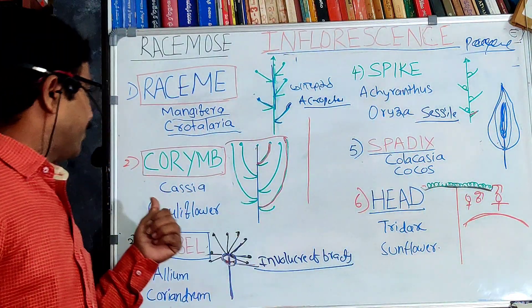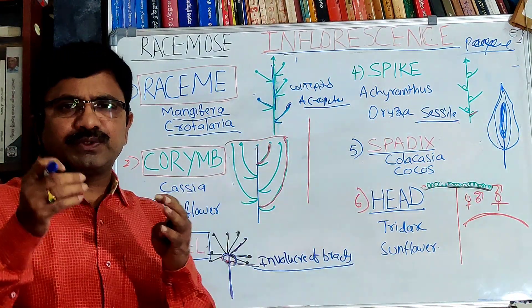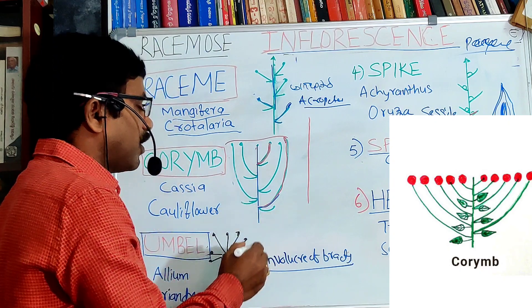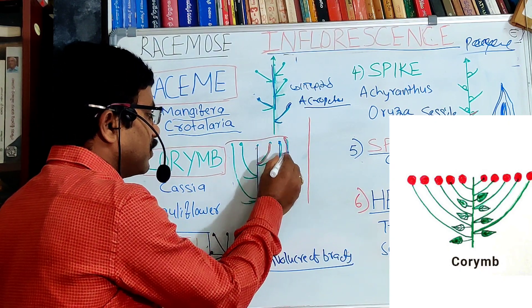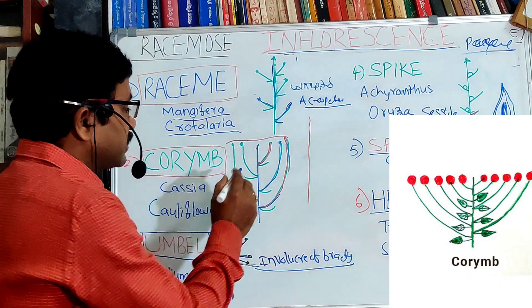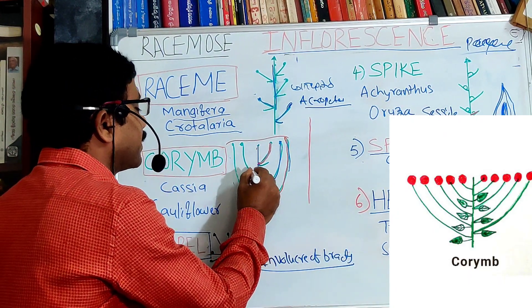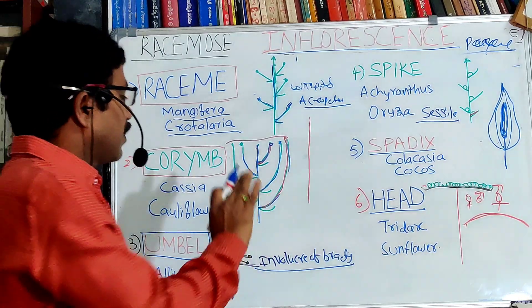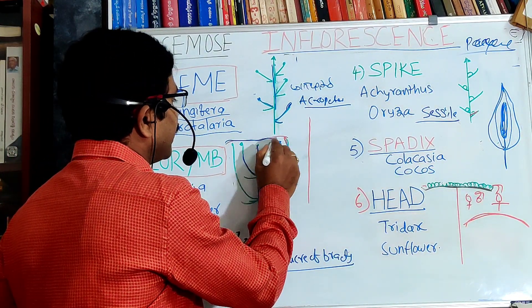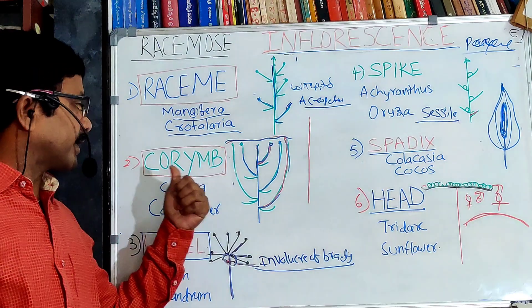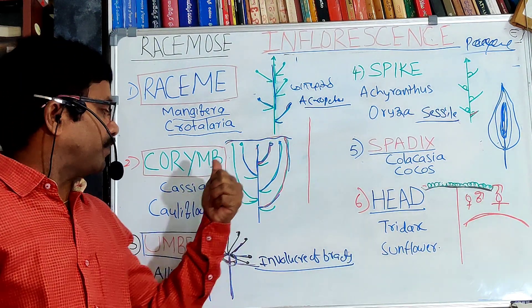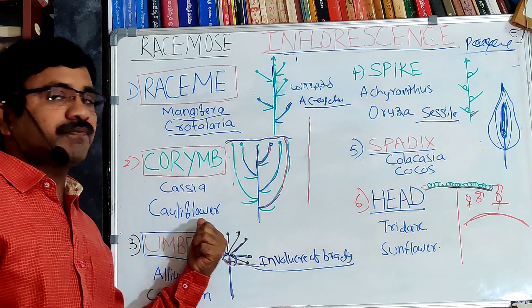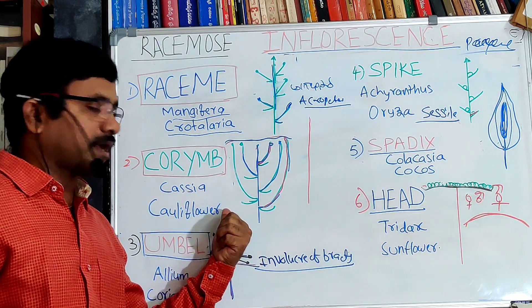The second type is corymb. The unique feature of corymb is that flowers arising from the basal part of the peduncle show a long pedicel, whereas flowers arising from the apical part show a short pedicel. As a result, all flowers are brought to the same level. Corymb is found in Cassia auriculata and cauliflower.